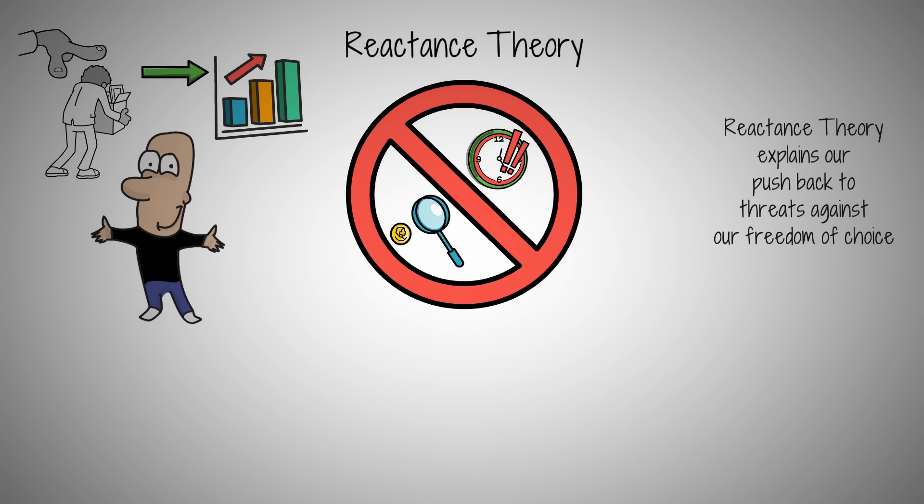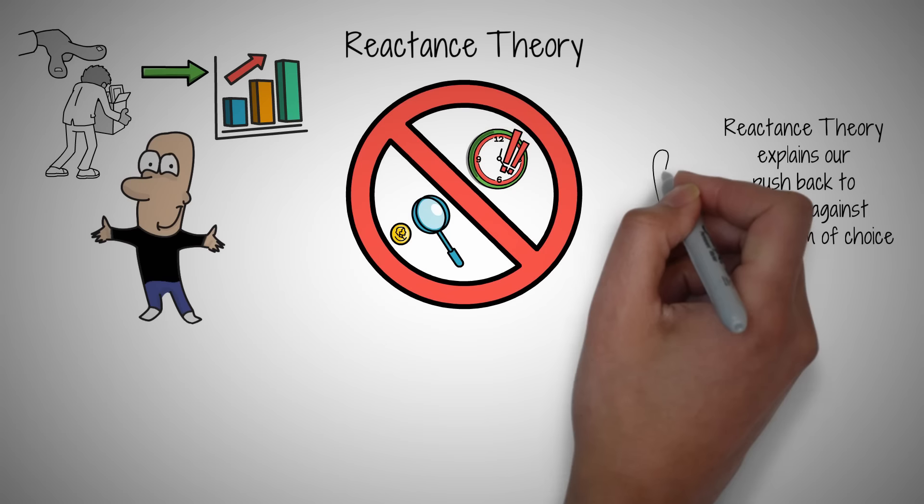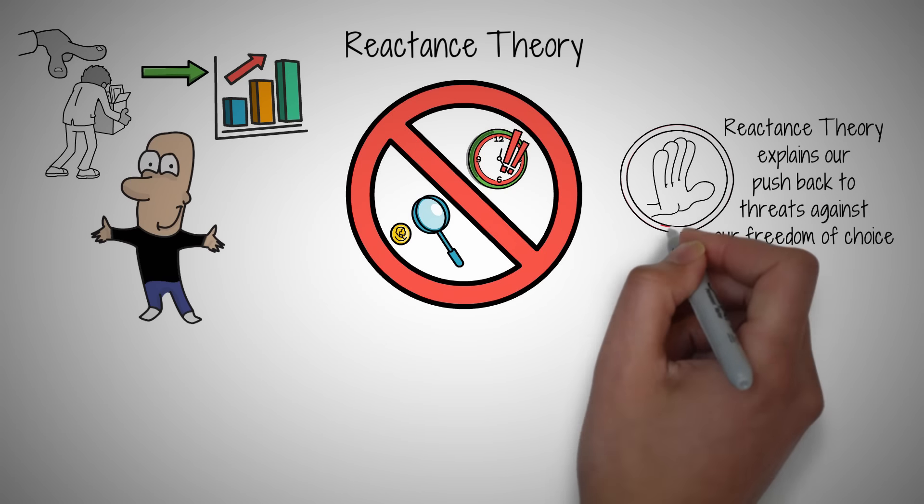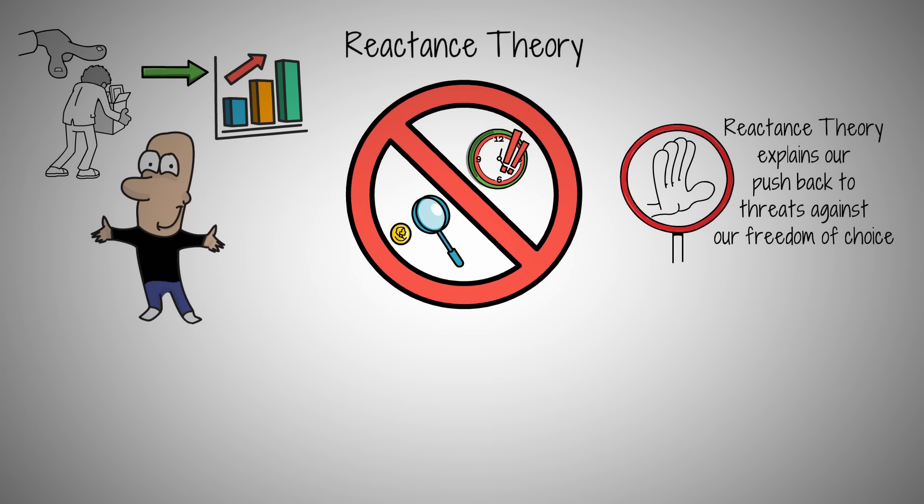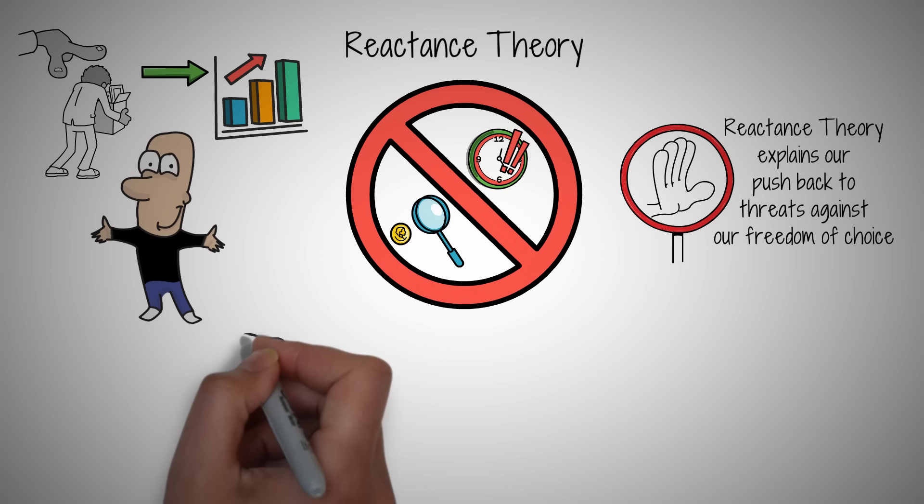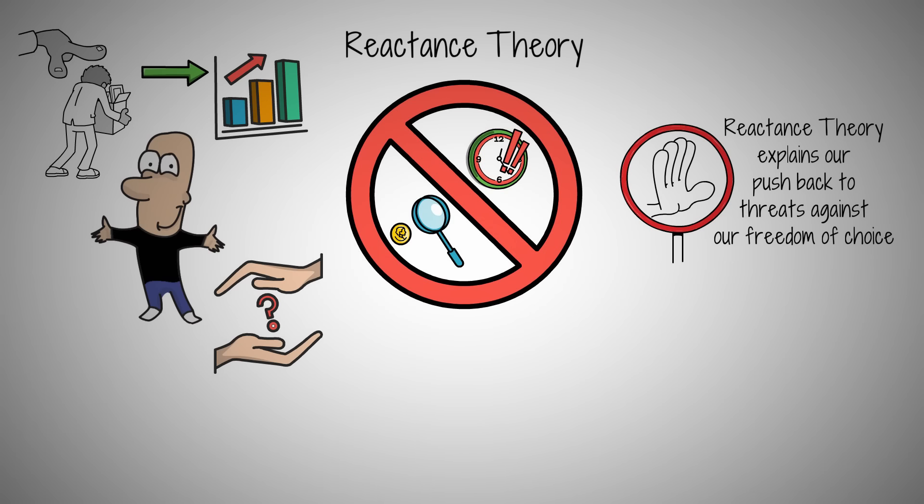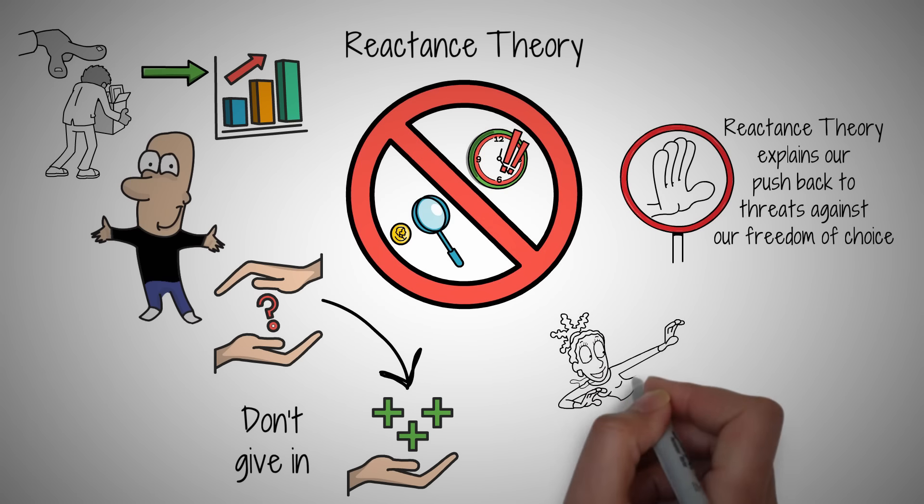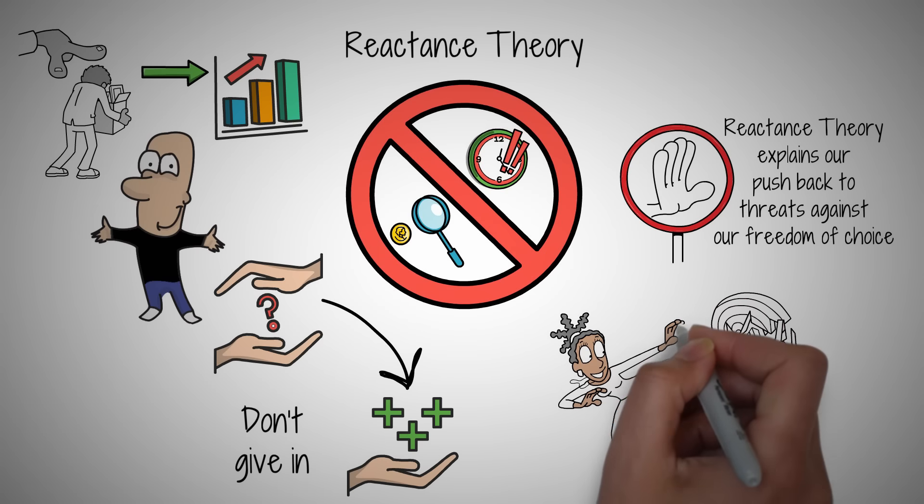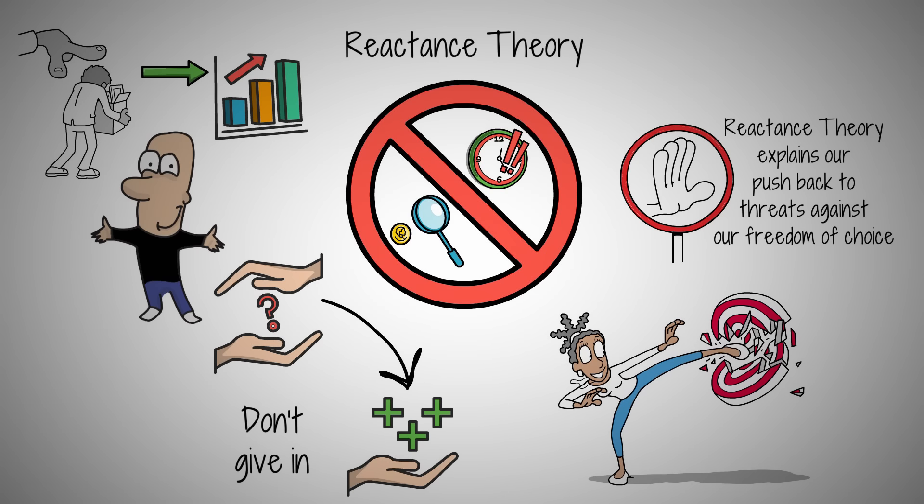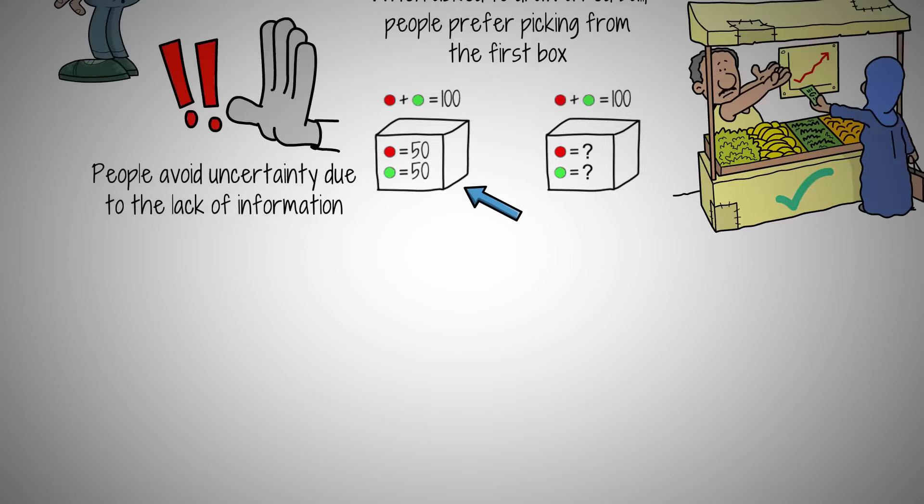Reactance theory explains our pushback to threats against our freedom of choice. When Jobs was told he was no longer needed at Apple, it triggered a motivational surge to prove his worth. So, how can this theory help us? It teaches us that when faced with restrictions, instead of giving in, we should channel our reaction into a positive force. Like Jobs, use limitations as a launchpad for creativity and innovation. The next time you're told you can't, remember it's your signal to soar. Use that no as a step to your next big yes.